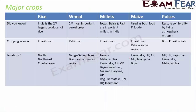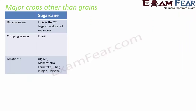So far we have covered five major food crops: rice, wheat, millets, maize, and pulses. Key points include their speciality, why we need them, their cropping season, and where they are grown in India. Now let's move ahead and talk about crops which are not grains.